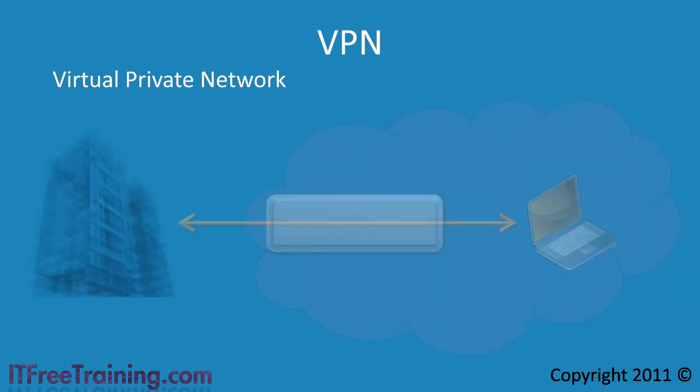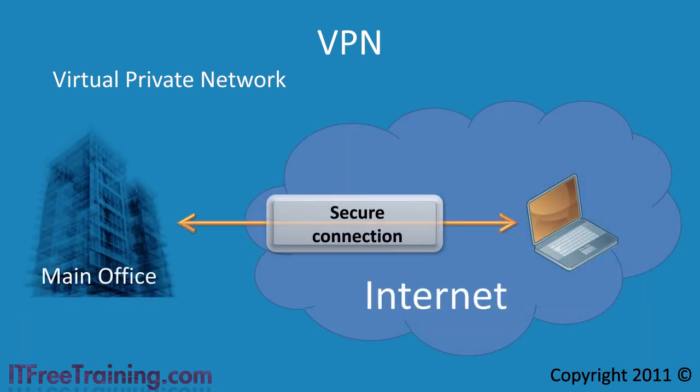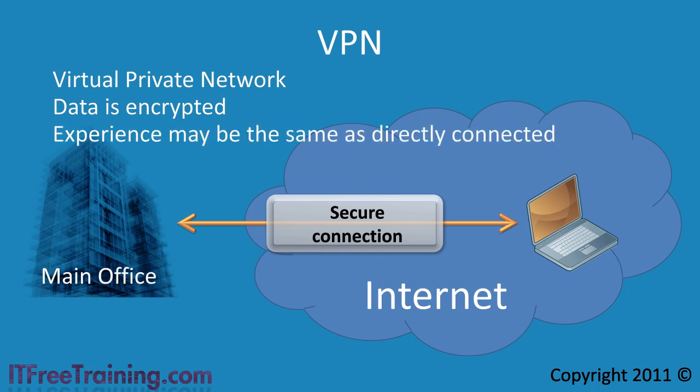A VPN connection is a secure connection that uses the internet to transfer data between two points. Since the internet is a public network, the data is encrypted to prevent unauthorized eavesdropping. Once the data reaches the VPN device — which can be a hardware device or software such as Windows Server — the data is decrypted. In a lot of cases the VPN infrastructure will be configured so the user gets the same network experience as if they were connected locally. Of course the speed will be slower.